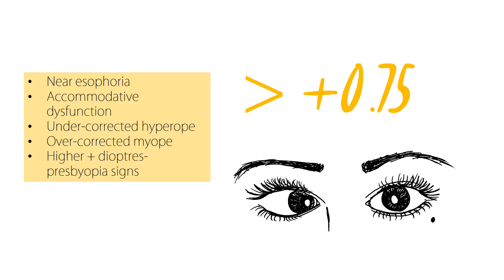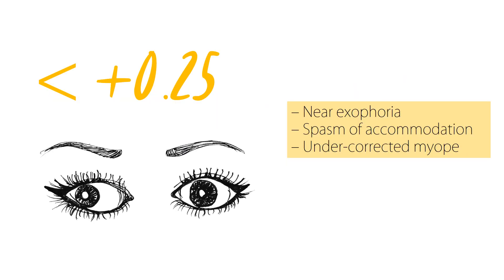If the lag is more than two diopters, this is showing signs of presbyopia. All values below +0.25 indicate a lead of accommodation, which can suggest near exophoria, spasm of accommodation, or under-corrected myopia.